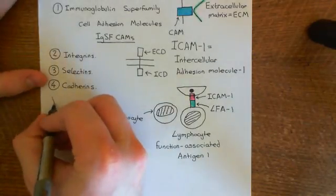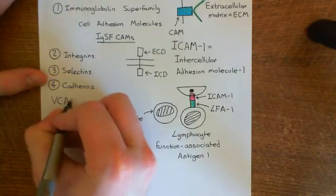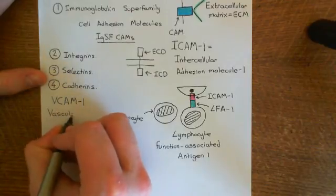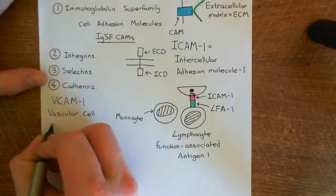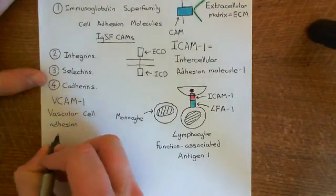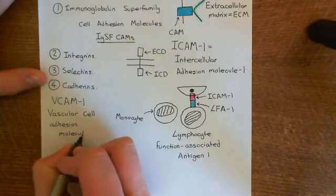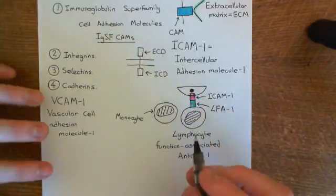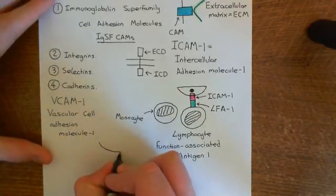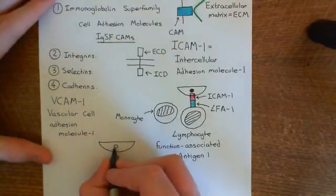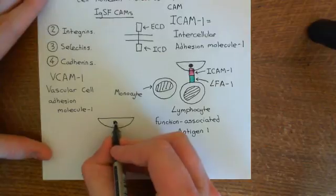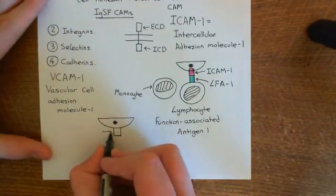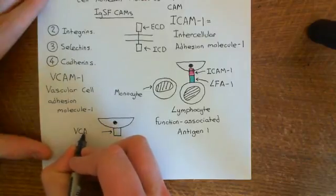The next famous example in immunology is VCAM-1, which stands for vascular cell adhesion molecule 1. This has pretty much the same function as ICAM-1 — activated endothelial cells put VCAM-1 on their surface, and it binds to an integrin protein on the surface of monocytes, though a different integrin to the one that ICAM-1 binds to. The endothelial cell undergoes activation when the pathogenic infection begins and then expresses VCAM-1.